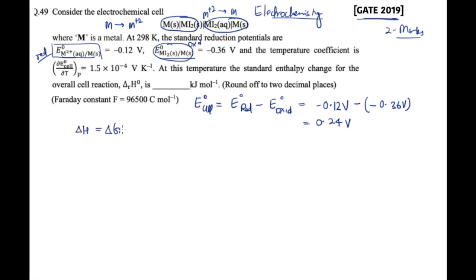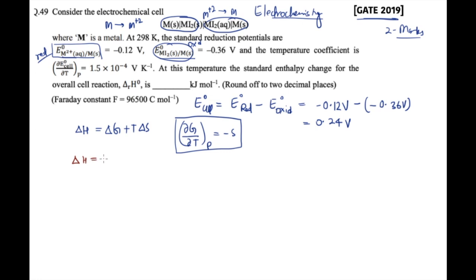We know that ΔH = ΔG + TΔS, and from the Gibbs equation we know that (∂G/∂T) at constant P equals −S. Substituting, ΔH = ΔG − T·(∂G/∂T) at constant P. Now we substitute ΔG = −nFE° into this expression.